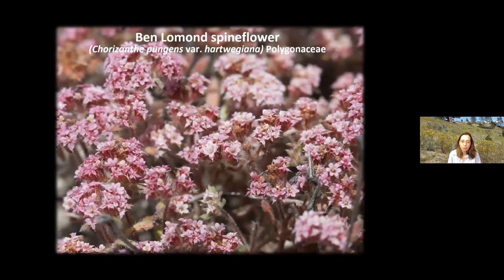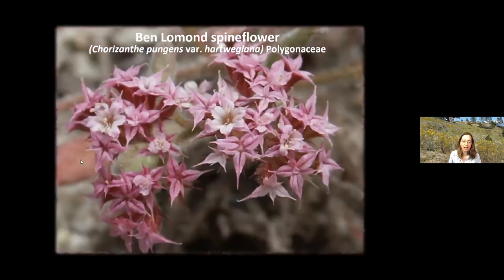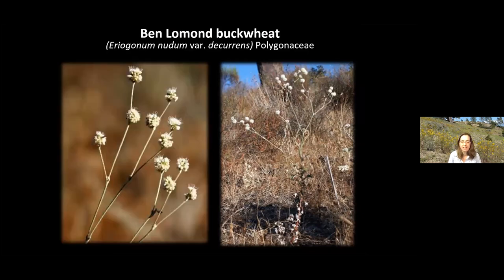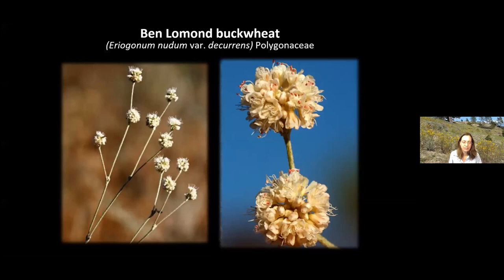Ben Lomond spine flower is an annual plant in the buckwheat family — a small herbaceous plant. It is named for the spiny involucres, which are parts of the flower that help the fruits disperse by getting attached to the fur of rabbits, deer, and other species. We also have Ben Lomond buckwheat, a perennial species also in the buckwheat family. This one flowers in the summer — July, August, September — so you can find this endemic plant in the Sandhills during those months. It has wonderful little white flowers that are visited and probably pollinated by all sorts of ants.